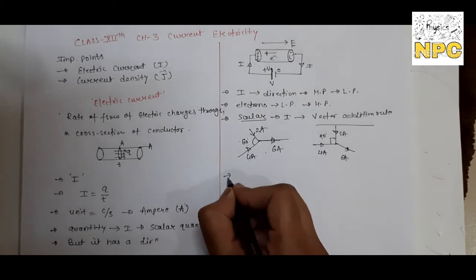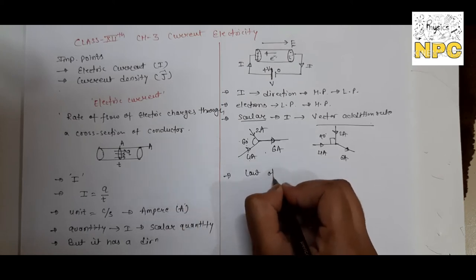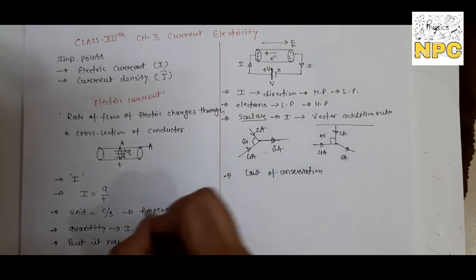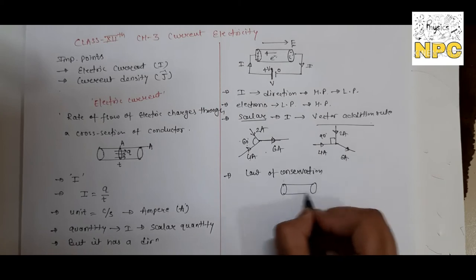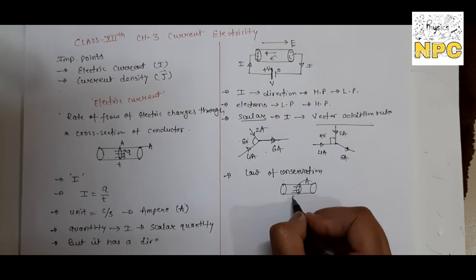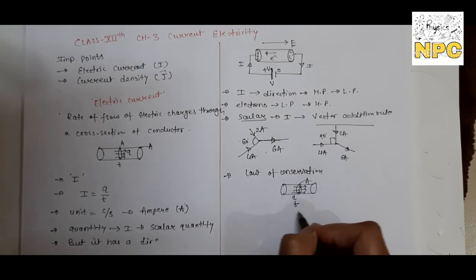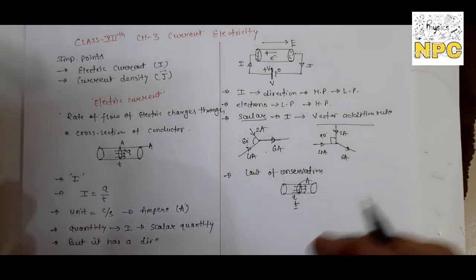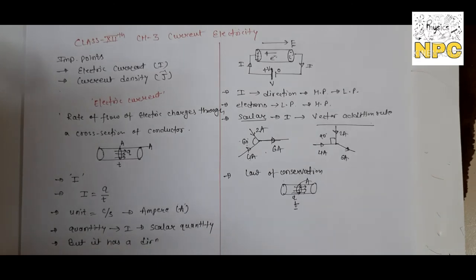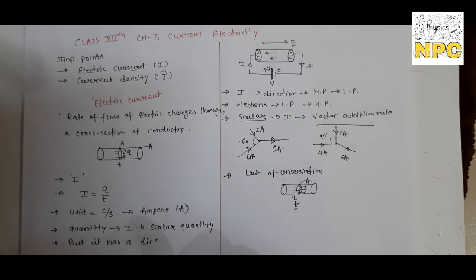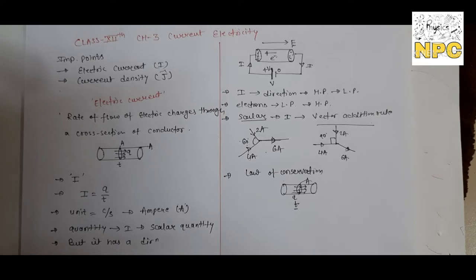Electric current also follows the law of conservation. Simply, if you take a conductor with cross-sectional area A, and Q amount of charge enters at time T, then the same amount of charge will leave from the other cross-sectional area in the same time interval. Charges can neither be created nor destroyed - they can only move from one point to another. This is the law of conservation.